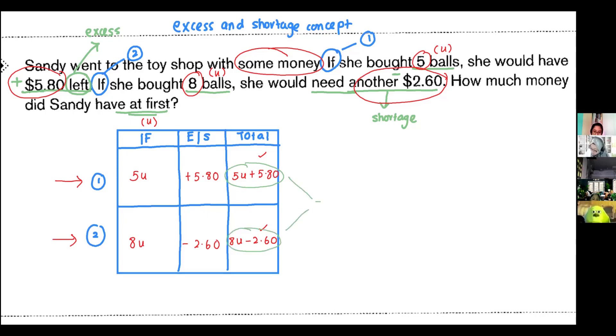So, this is the same. If it's the same, we can put it as a number statement. So, it will look like this. And then, equals to eight unit minus $2.60.